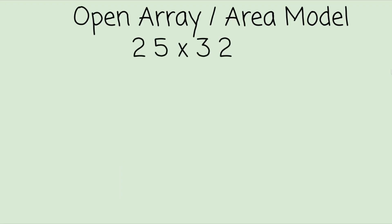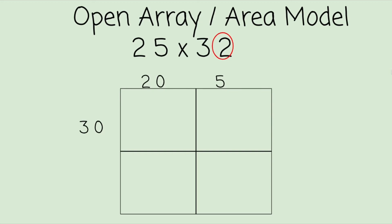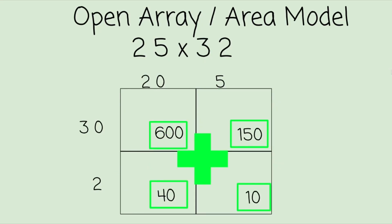Let's do one more example with the open array: 25 times 32. Again, we have two 2-digit numbers, so we'll have 2 columns and 2 rows. That 2 represents 20, that 5 is 5, that 3 is in the tens column so it represents 30, and that 2 is just 2. Time to multiply: 30 times 20 — think of it as 3 times 2 which is 6, then add 2 zeros. 30 times 5: 3 times 5 is 15, add that 0. 2 times 20 is 40. 2 times 5 is 10. Add them all up for a final product of 800.